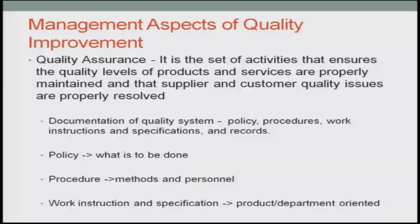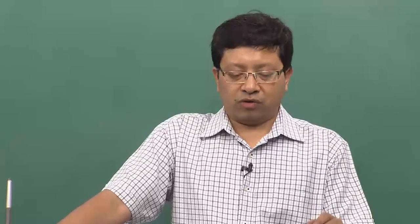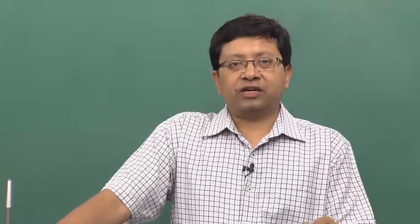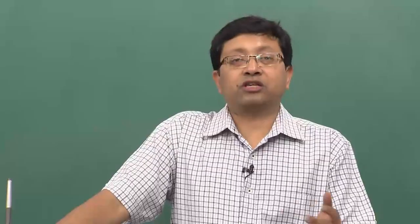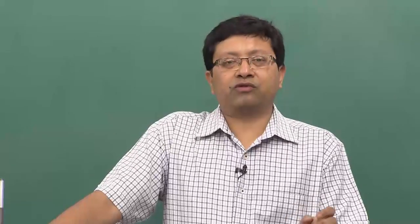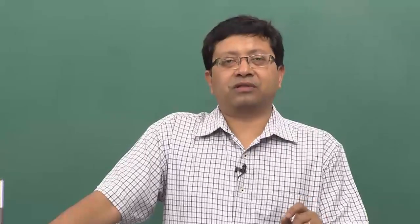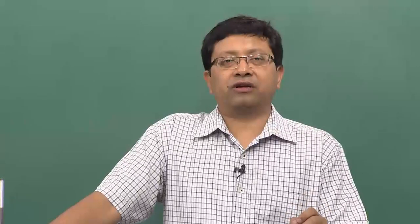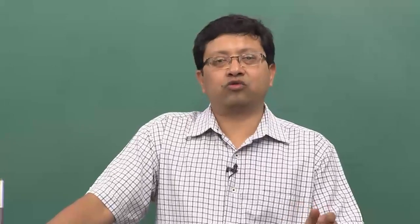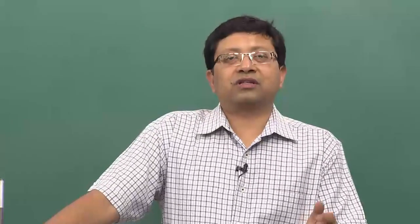Documentation of the quality system would basically have in detail the policy, the procedures, work instructions, specifications, and the records which will be maintained on a time-to-time basis, giving you a flow of how the overall quality assurance system works. It would also have in detail the policies — for example, what is to be done in case a defect of type one occurs, or what would you do if you are manufacturing a car and the car is being painted and there is a dent, or the quality of the paint is not up to standard, or the shade of the paint is not proper.